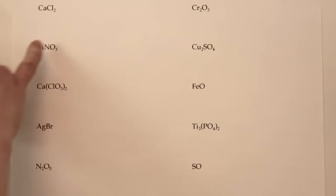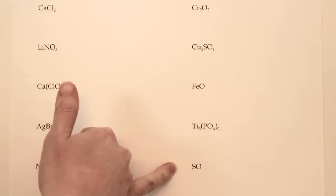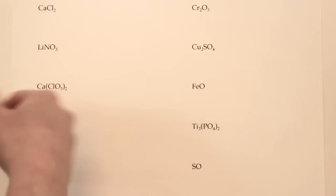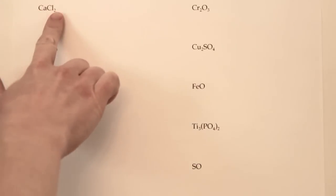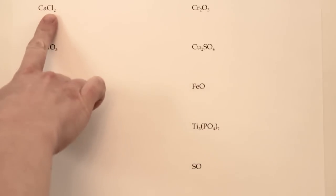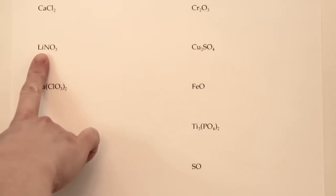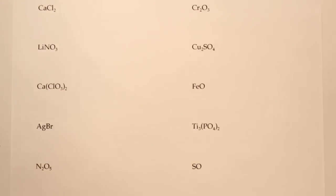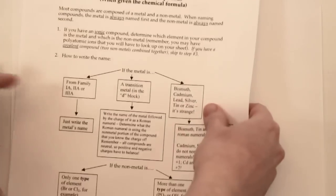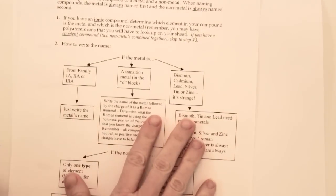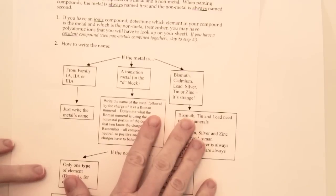For today's lesson we're going to see how to take a chemical formula like these and turn them into a word. What would you call CaCl₂, or what would you call LiNO₃? There's a little accompanying flowchart in your note sheet that you could download that has different scenarios of how to name something.